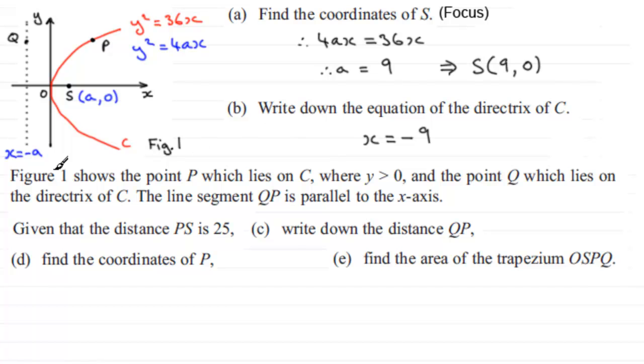Now, for this next part, we're told that in this figure, it shows the point P that lies on the curve C, where its y-coordinate is greater than zero. And we've also got this point Q, which lies on the directrix. Now, the line segment QP is parallel to the x-axis. And we've got to write down the distance of QP, given that the distance of P to S is 25 units. Let's just mark that in, that P to S is 25 units. And we'll also mark in this line segment QP, which is parallel to the x-axis.